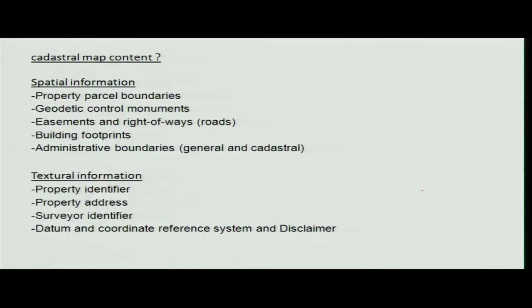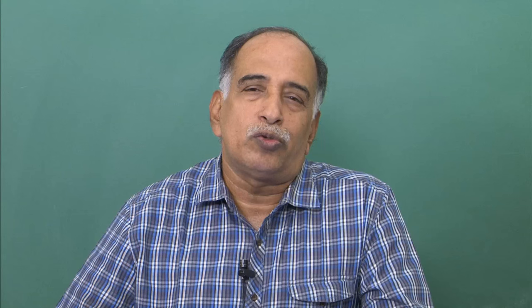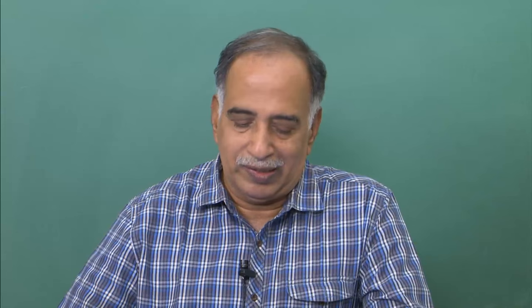Cadastral map content includes property parcels and control monuments. Control monuments are physical boundary markers — in previous years, pools or boundary stones with markings were placed on all four or six sides of a parcel depending on its type. These were kept as physical evidence to differentiate between one parcel and another.